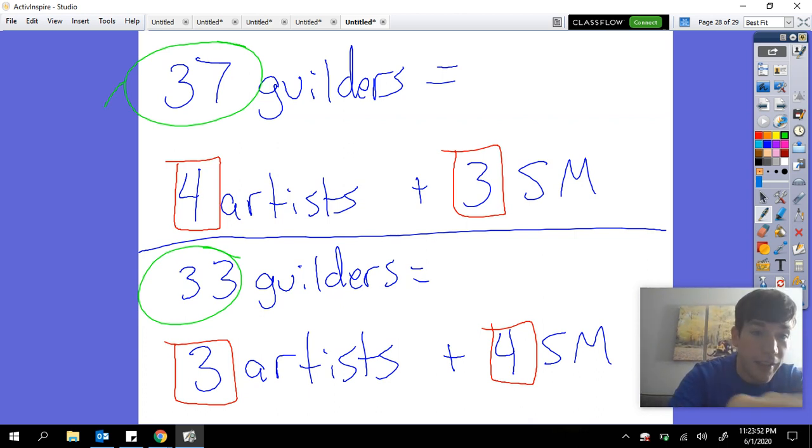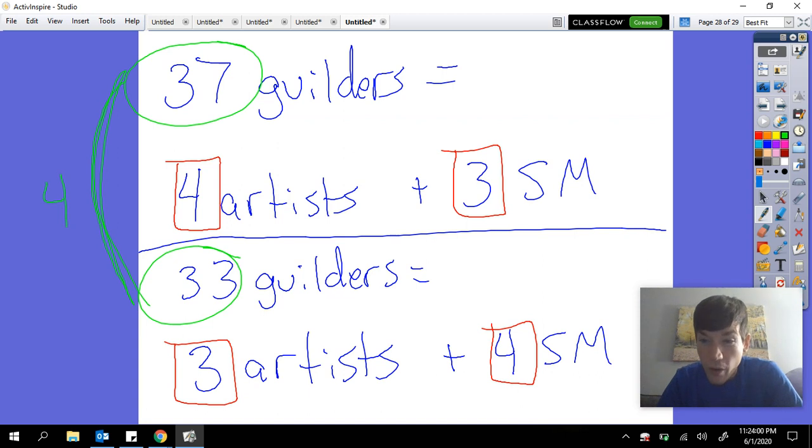Four guilders is the difference in cost between those. Now because the number of artists and the number of stonemasons just flipped—four and three versus three and four—I can then say that the cost for an artist must be 4 more than the cost of a stonemason.